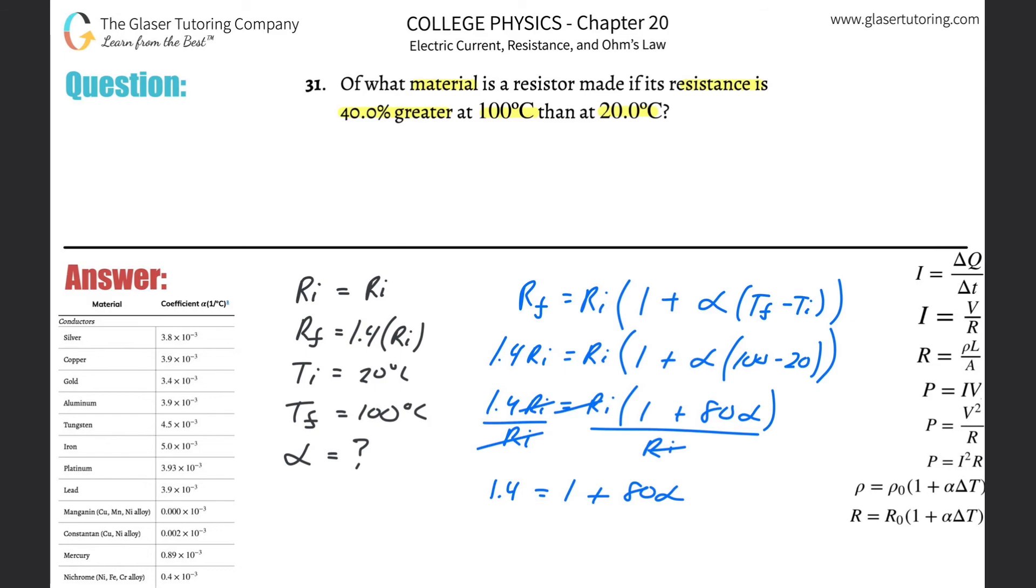I got that left on the right-hand side. Subtract one from both sides, so 0.4 = 80α. I'm going to divide by 80 on both sides. My alpha value is 0.4 divided by 80, which gives about 5 × 10⁻³. The units of alpha are per degree Celsius. Okay, cool. So this is the alpha value.